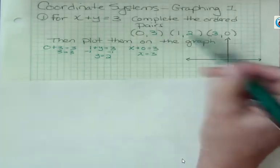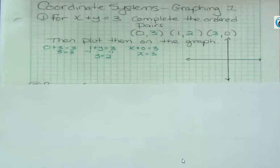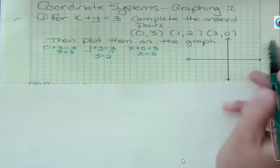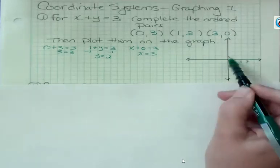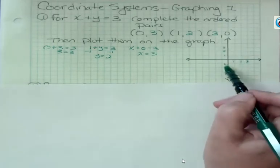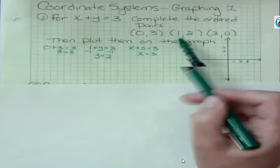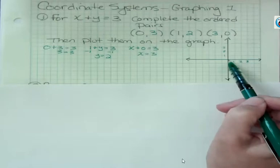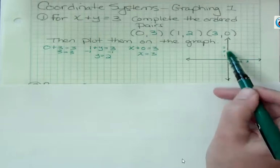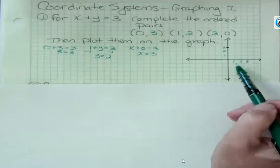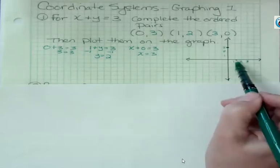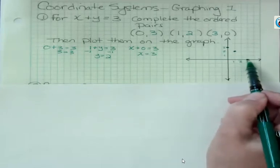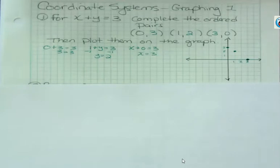Now if we did this correctly, when we plot our three points, they should form a line. Starting at the origin, and you can number these lines quickly if you want. Sometimes I don't number them until I see how far I'm going out. Here I don't have any negatives, all positives, only to three, so I just numbered up to three. Zero, three. Starting at the origin, I don't go left or right, because I have zero, but I go up to three, and then I have one, two. So I go one to the right, and two up, and three, zero, three to the right, and then I don't go up or down. Now I've got three points, and they do form a line.